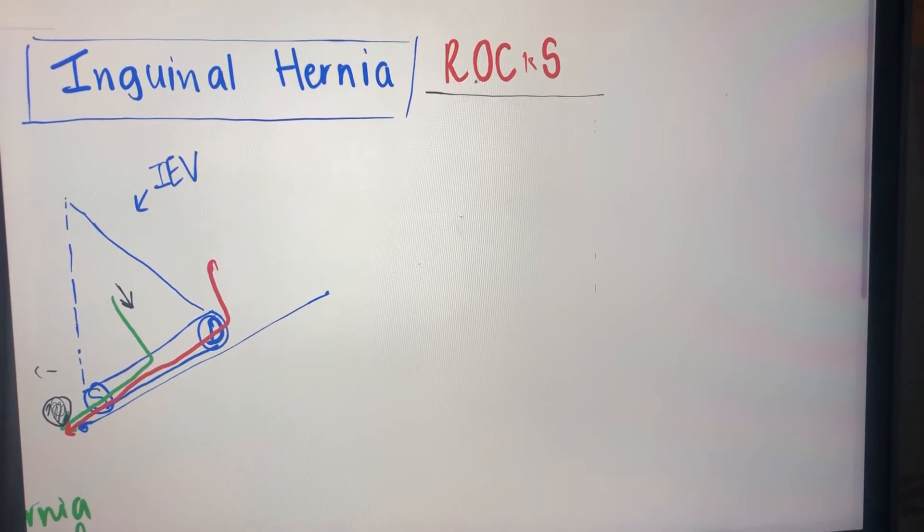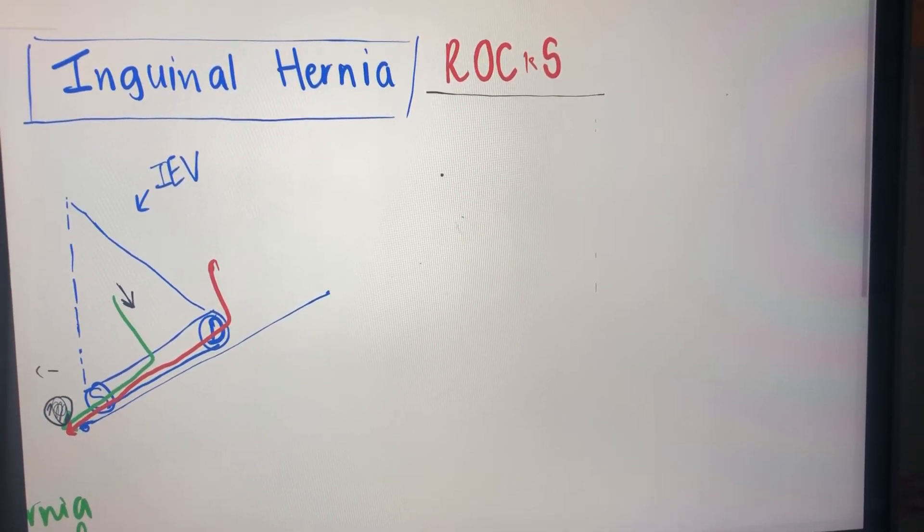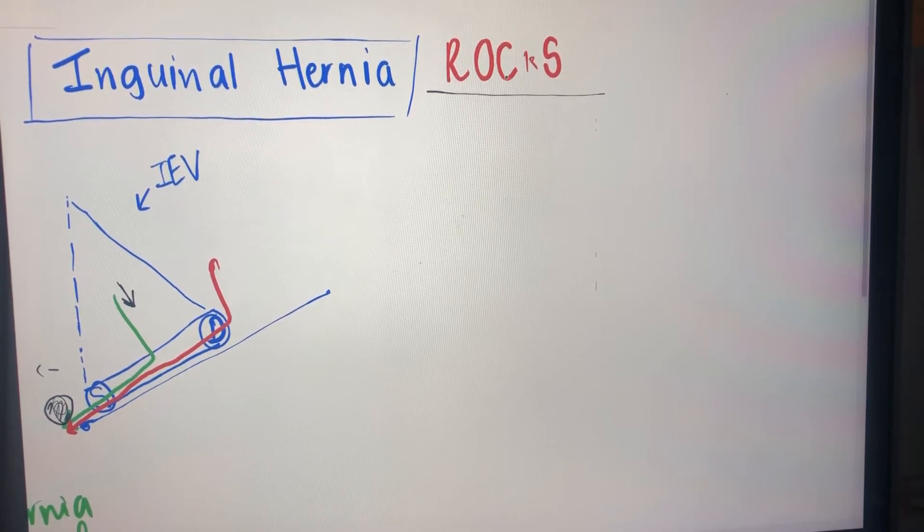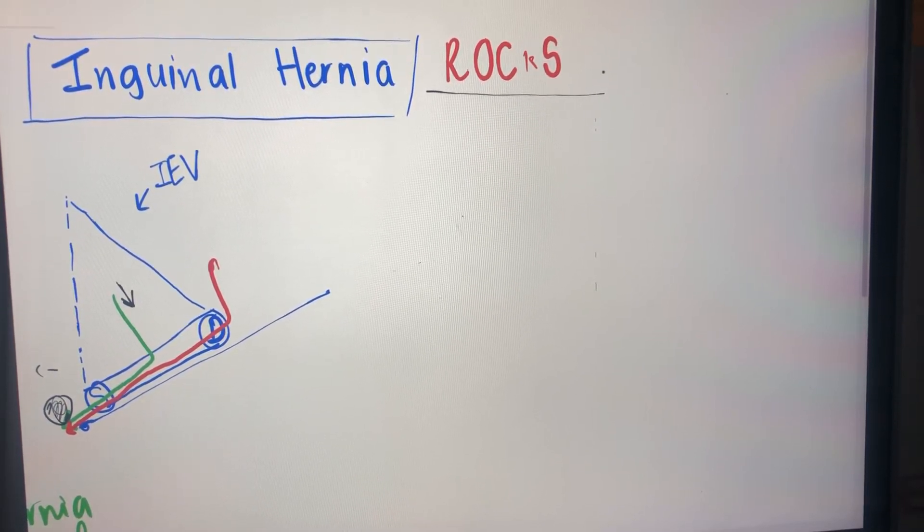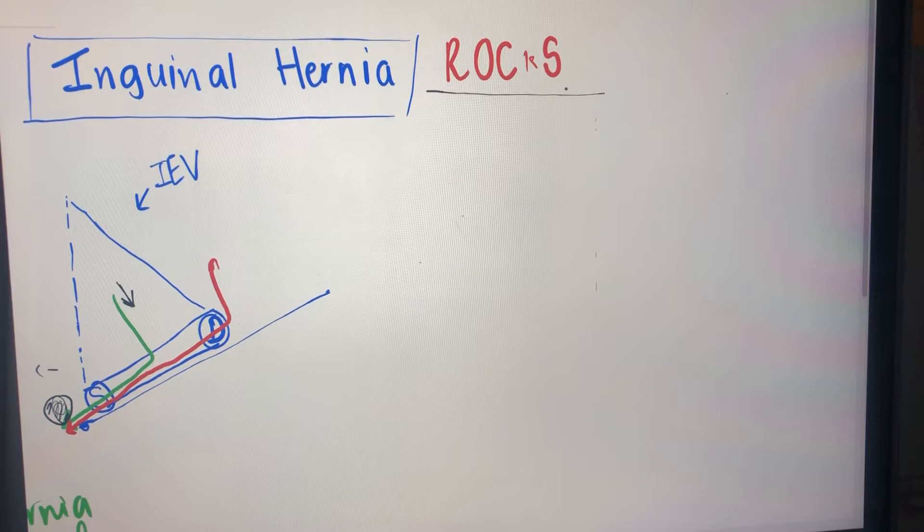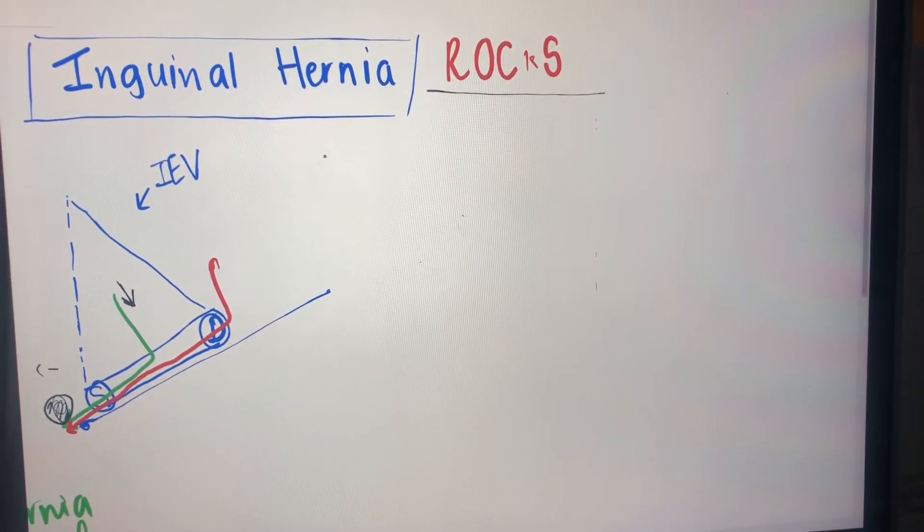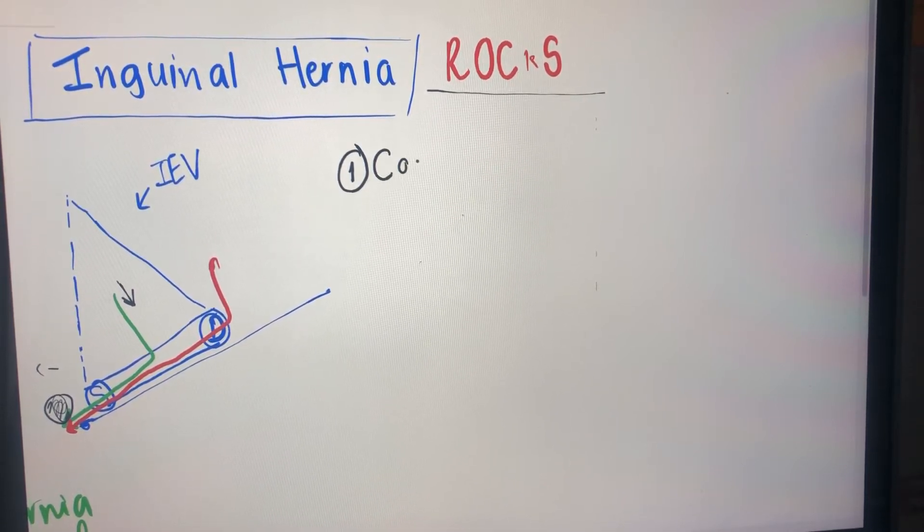Now R stands for the reducible type of hernia, O stands for the obstructed, C stands for the complete, and S stands for the strangulated. So I'll start off with the complete type of hernia because there's an order and we can understand what each type really means.